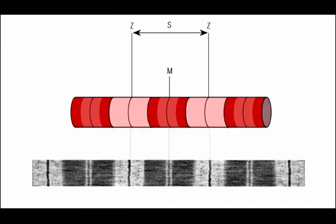This reiterates that point. We have the M-line here, here, and here, with sarcomeres in between. When you look with a really good microscope you can see the bands shown in the panel at the bottom. In this class, you don't need to know the A band and the I band in detail.